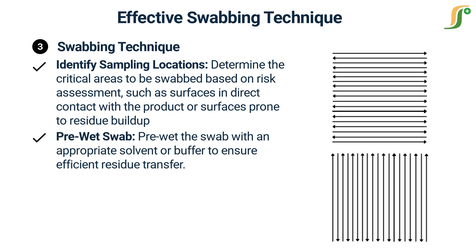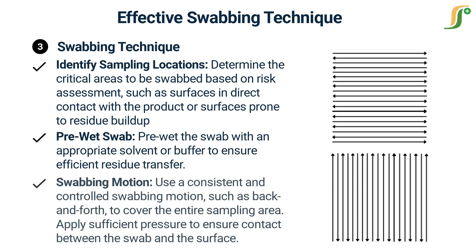Swabbing motion. Use a consistent and controlled swabbing motion, such as back and forth, to cover the entire sampling area. Apply sufficient pressure to ensure contact between the swab and the surface.